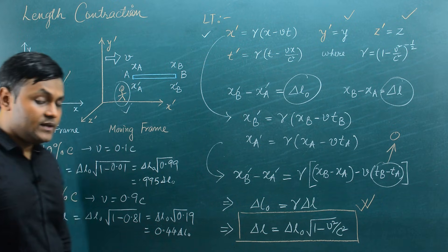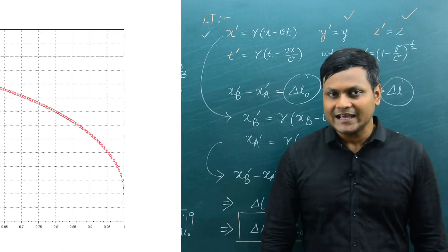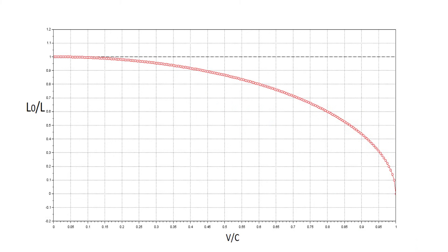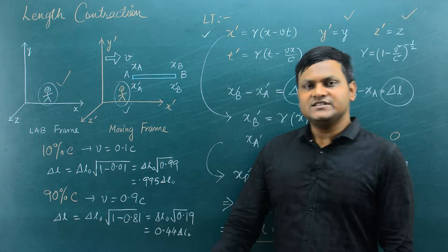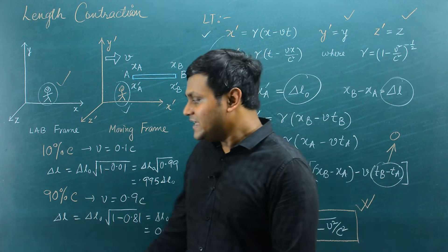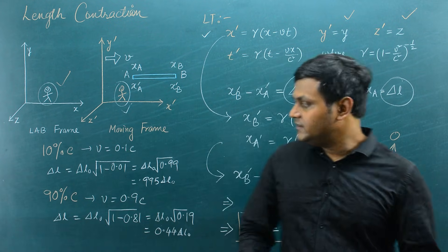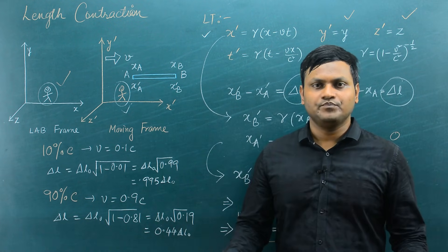If you look at this particular graph, you can see that as velocity increases from 0 to the speed of light, the contraction happens only when the velocities are comparable to the speed of light. That is why we do not see these kinds of length contractions in day-to-day life. Now you may ask: if this is actually a fact about the nature of the universe, is there any experimental evidence? Yes, there are lots of experimental evidences regarding length contraction.